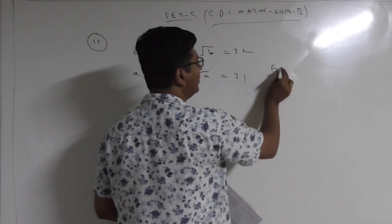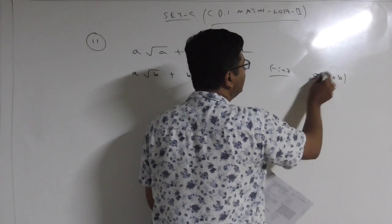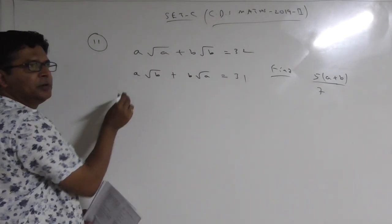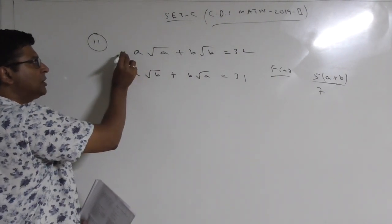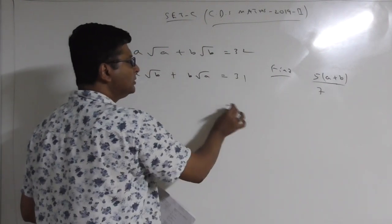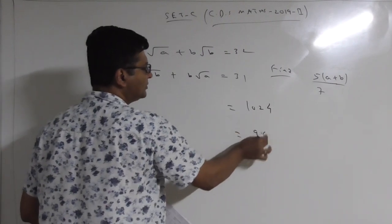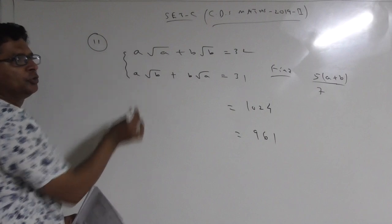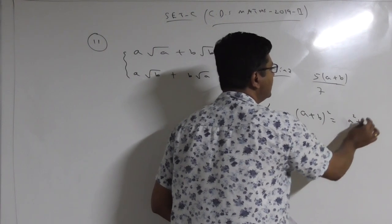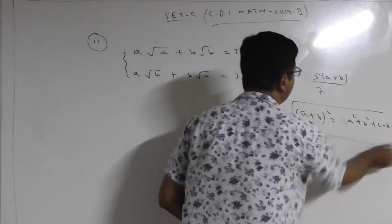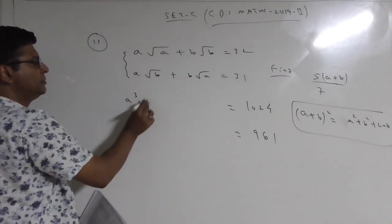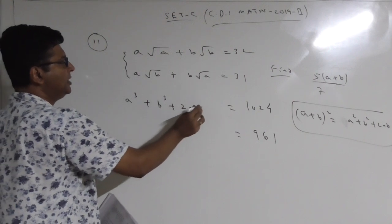The question asks you to find the value of 5(A+B)/7. How do you get the idea? First, you have to square both equations and then subtract them. When you square both equations, you should be clear with the squares: 32² = 1024 and 31² = 961. On squaring, use the formula (A+B)² = A² + B² + 2AB. Squaring the first equation gives A³ + B³ + 2AB√A.